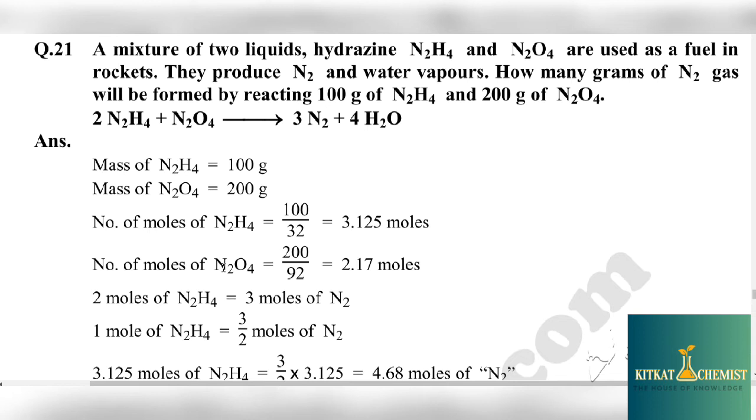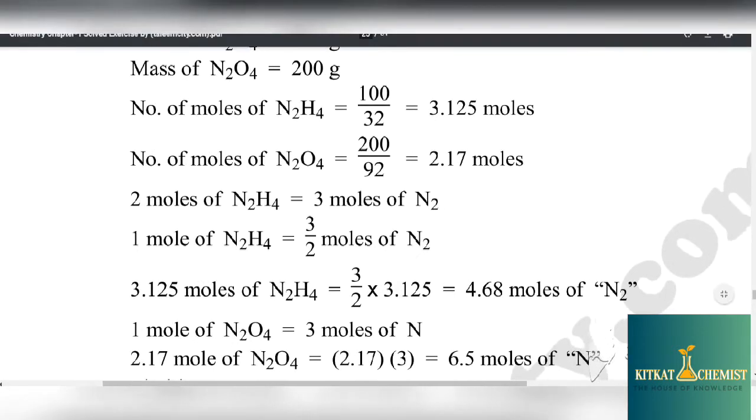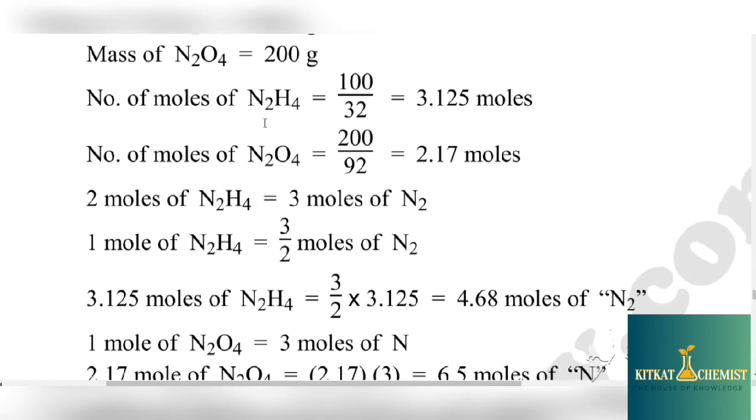For nitrogen, the mass of nitrogen is 14 multiplied by 2, plus 16 multiplied by 4. The answer is 92. So 200 divided by 92 equals 2.17 moles. Now we have to compare. First we will compare how much N2H4 gives nitrogen, and then we compare the amount of N2O4 that gives nitrogen. The balanced equation is given in your question.